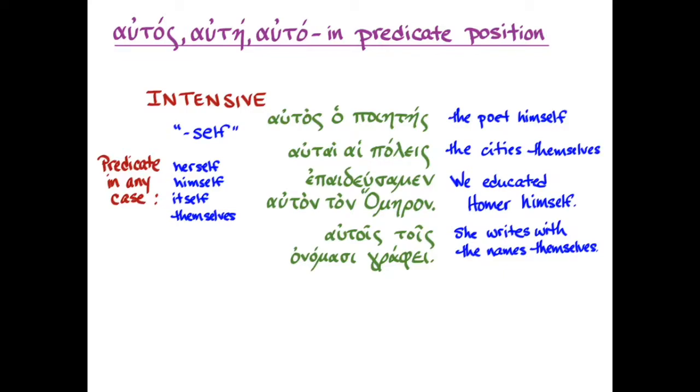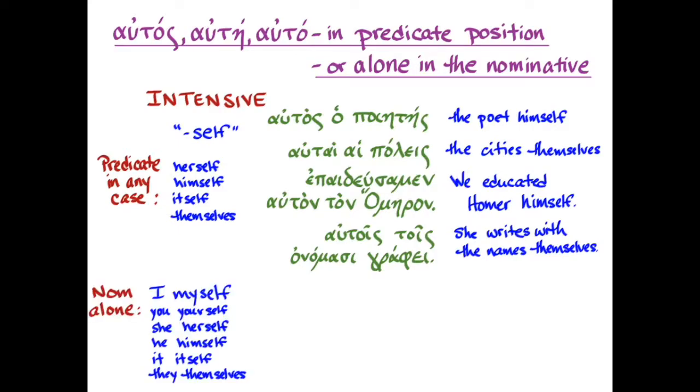Now, I don't know if you remember, but I said when we were talking about autos as the third person pronoun, that you cannot do that in the nominative case. That it only happens in the genitive, dative, and accusative, those oblique cases. So you may have wondered what happens if autos shows up alone in the nominative case. Well, what it's doing is actually modifying the understood subject of the verb and intensifying it. So we'll get what English does with a pronoun, I myself, you yourself, she yourself, he himself, or it itself, depending on what the subject is in the singular, or they themselves in the plural.